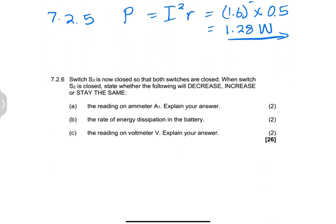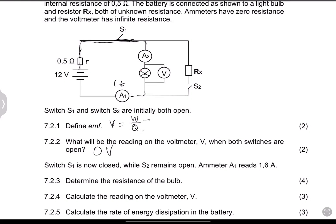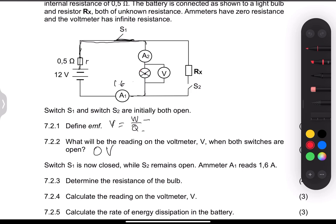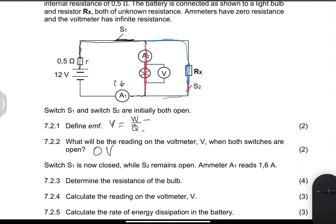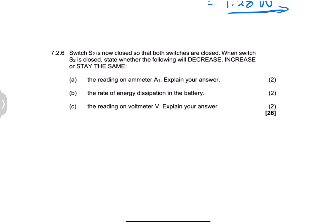Now they say switch S2 is now closed, so both switches are closed. The moment we close the switch, we now have a parallel combination. Some of the current will pass through the bulb and ammeter, but some will pass through resistor RX. Remember, the moment you connect resistors in parallel, the total external resistance decreases, and because I = V/R, the current in the circuit will increase.